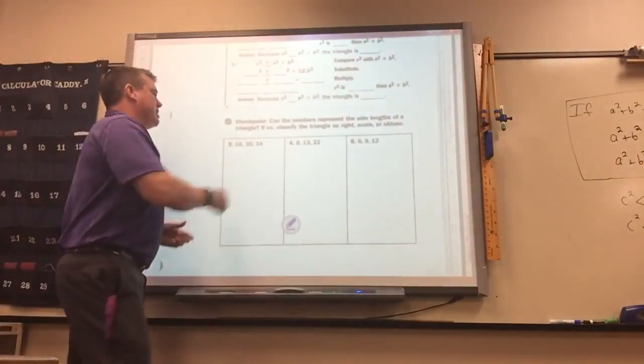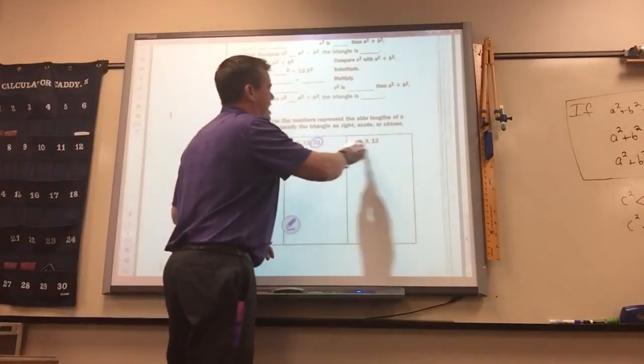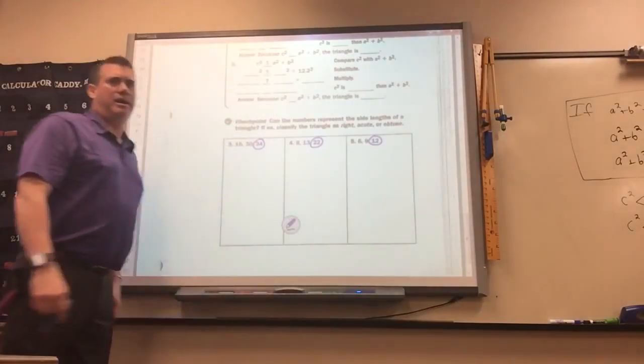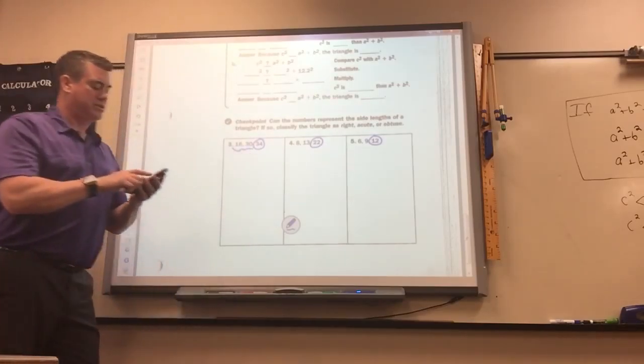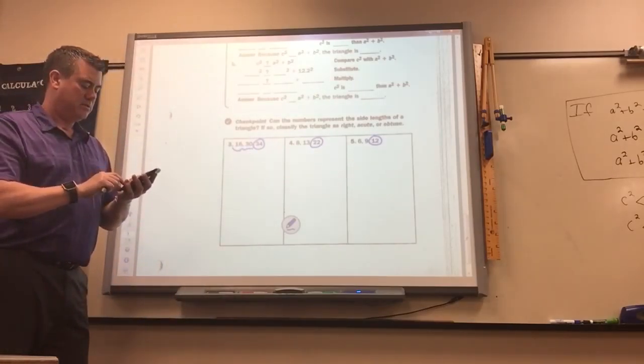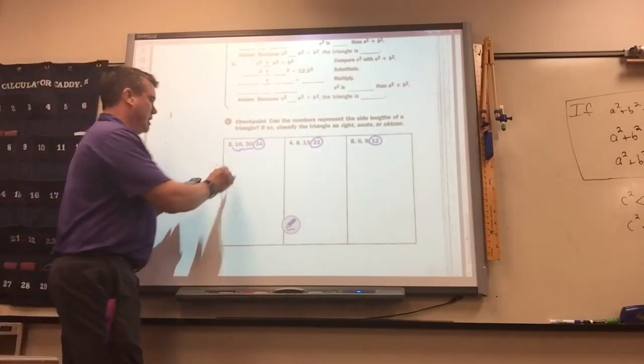So again, all of these they did put them in order. Just remember in the assignment they're not always going to be in order. So 16 squared plus 30 squared is 1156.